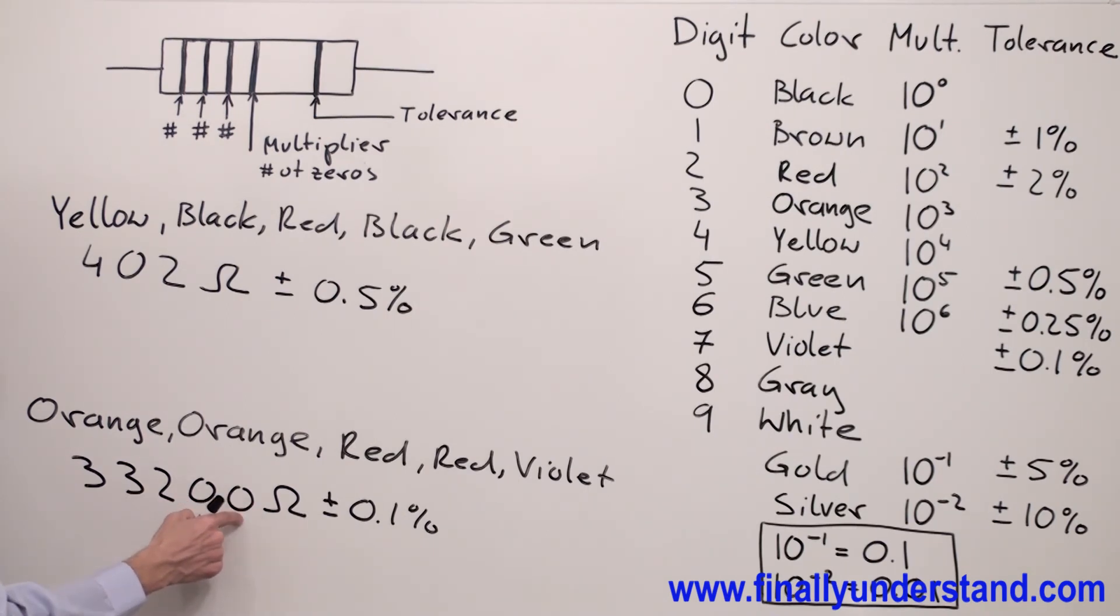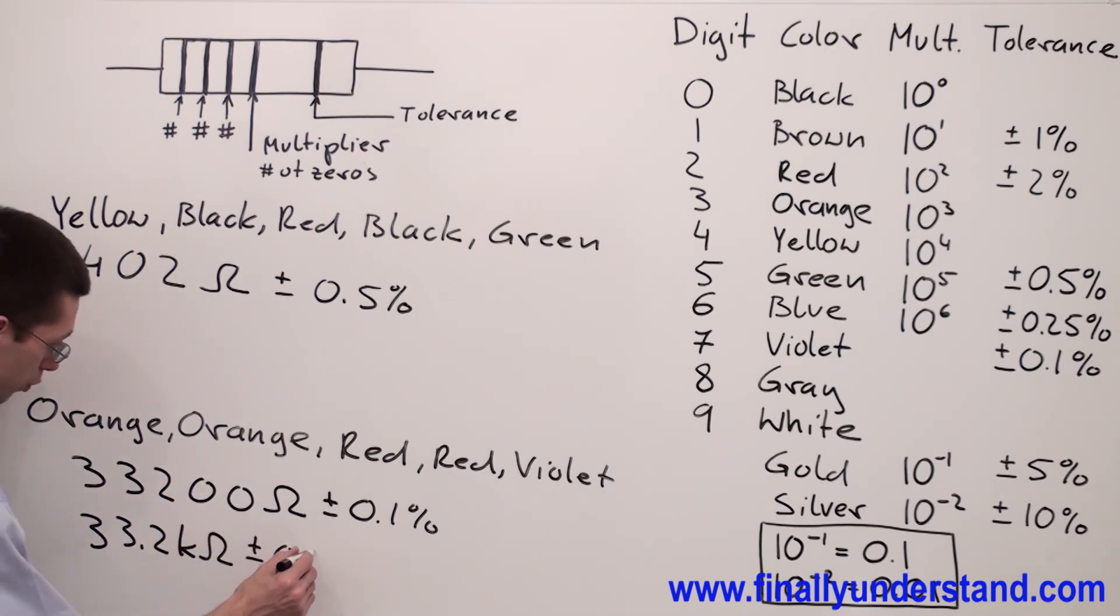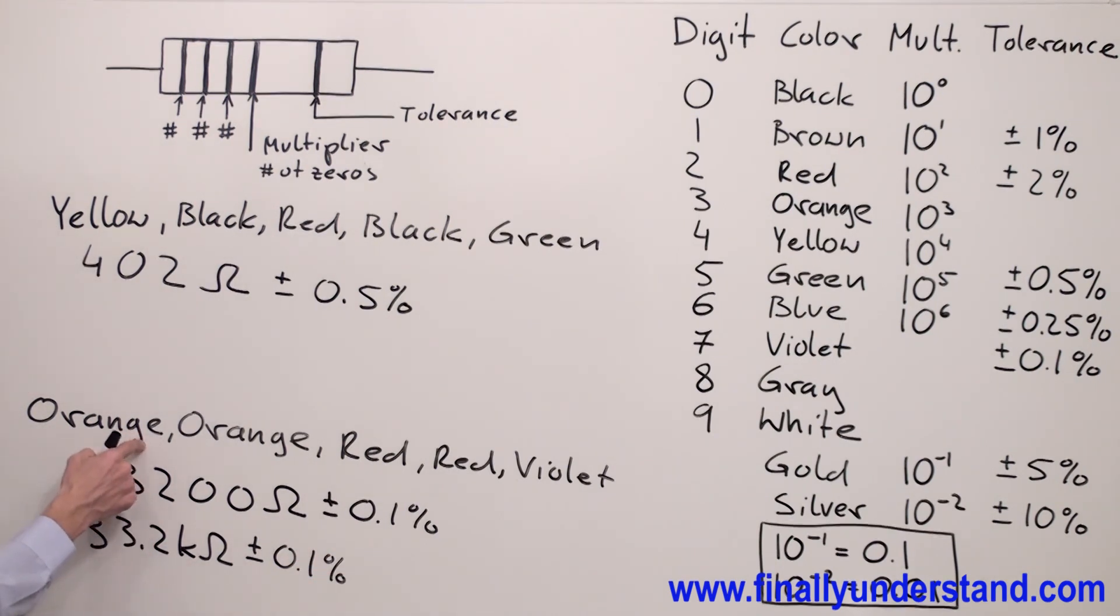Anytime you move the decimal point three times to the left, you end up with kilo. So that's why you have 33.2 kilo-ohms plus minus 0.1%. This is the resistance of this resistor.